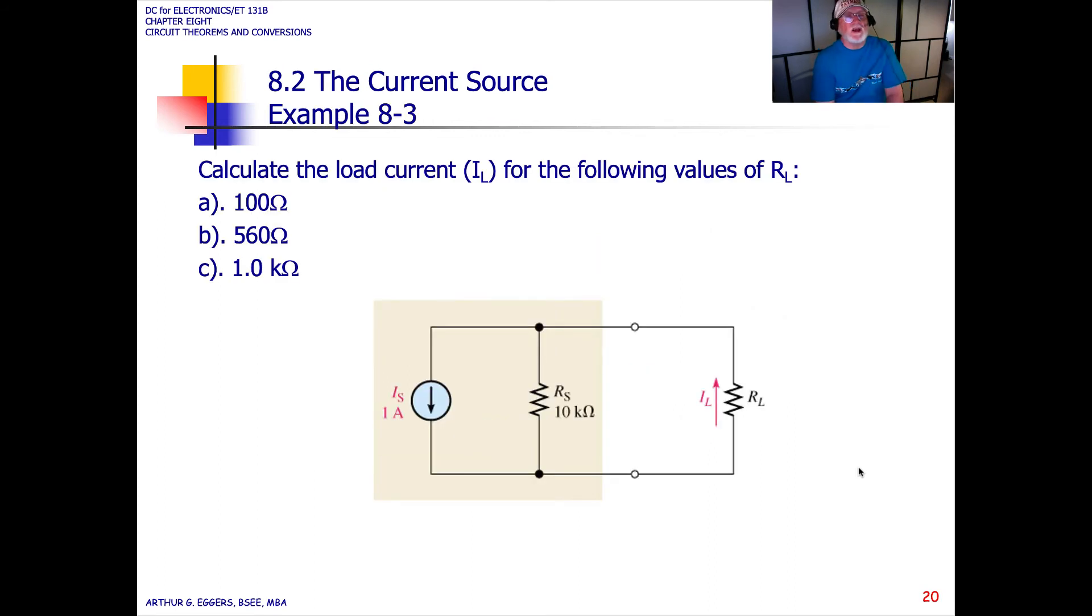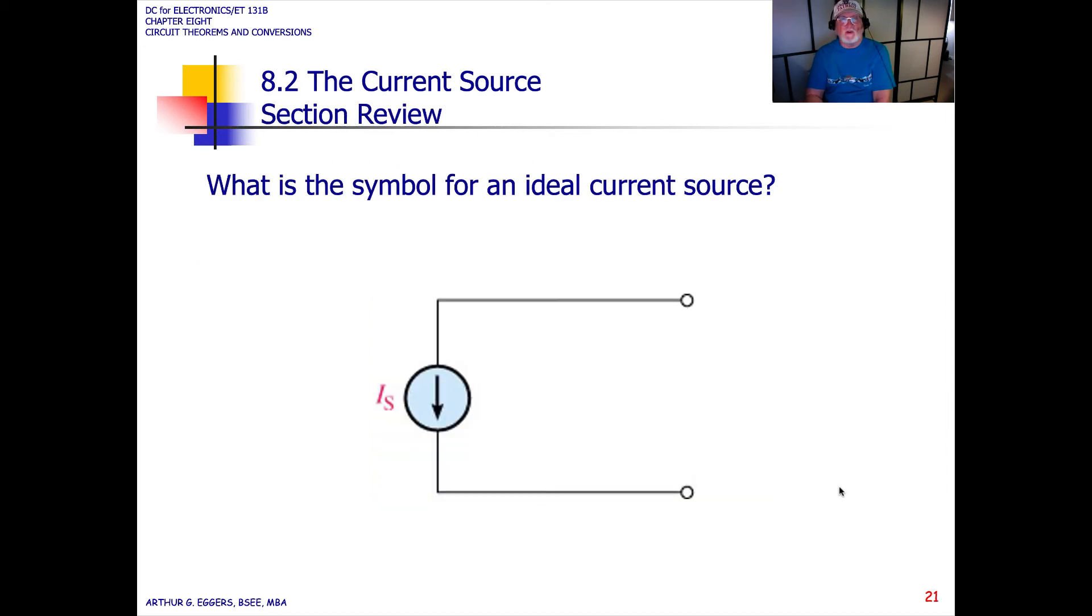If we take a look at our examples here, calculate the current load for the following values. I'm going to let you do this. I'll give you three values of the load itself. The resistance will stay at 10k ohms, and you will vary 100, 560, and 1k ohm out here on the load and calculate what you think that varying that load is going to do to the circuit.